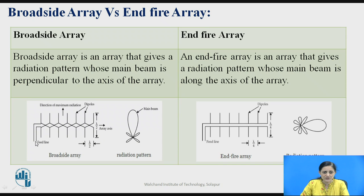In broadside array, the feeding point is at the center point, and in end fire array it is connected to the last end of the element. The element spacing is lambda by 4 in end fire array, whereas it is lambda by 2 in the case of broadside array antenna. In the broadside array radiation pattern, the major beam is perpendicular to the axis of the array.